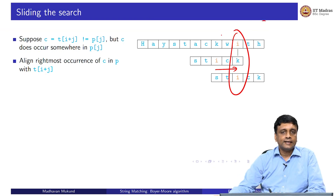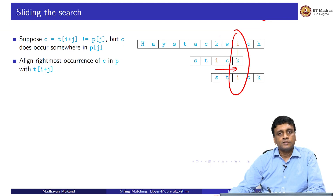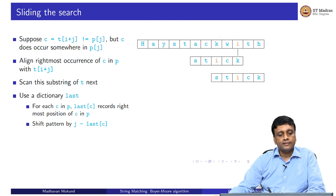This is the second case. We have the first case where the letter that we are mismatching does not appear in the pattern and we can skip over that entire position. The second case is when we have a match and we align. We are going to scan this substring next. How are we going to find out where this 'i' is?